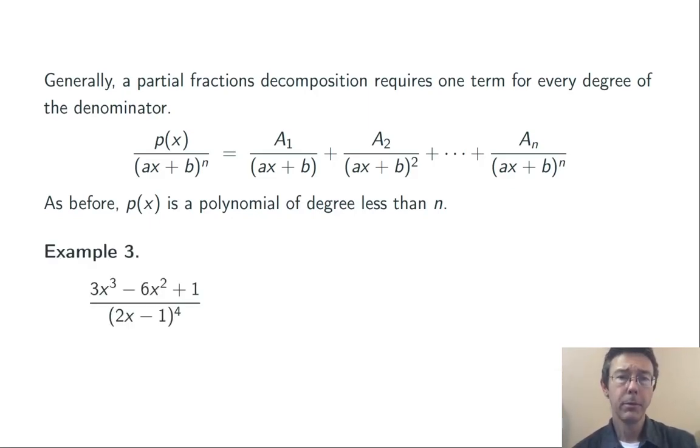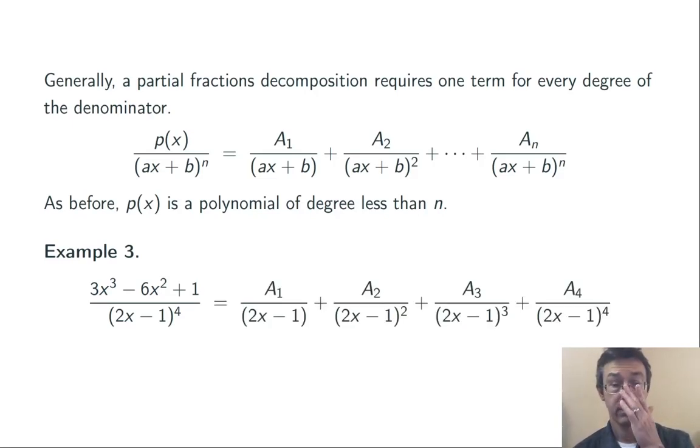So let's do an example or two where we just get the form of a partial fractions decomposition. (3x³ - 6x² + 1)/(2x - 1)⁴. So following the prescription that I've got right above, I get A₁/(2x - 1) + A₂/(2x - 1)² + A₃/(2x - 1)³ + A₄/(2x - 1)⁴. Pretty clear? I hope so.